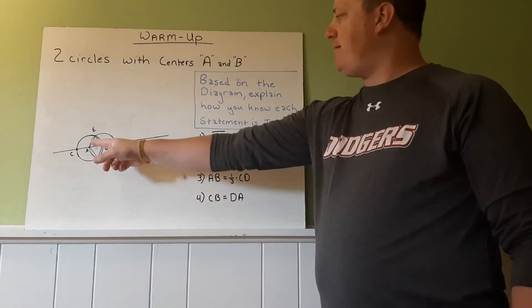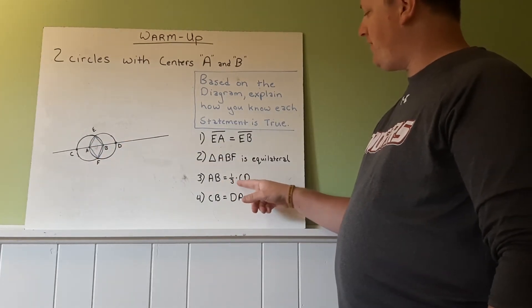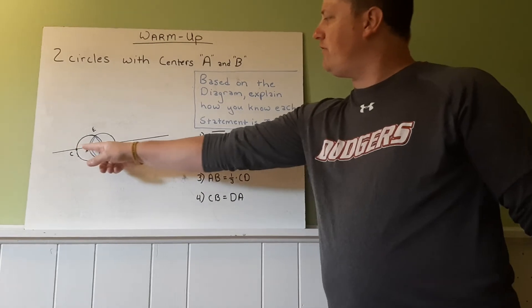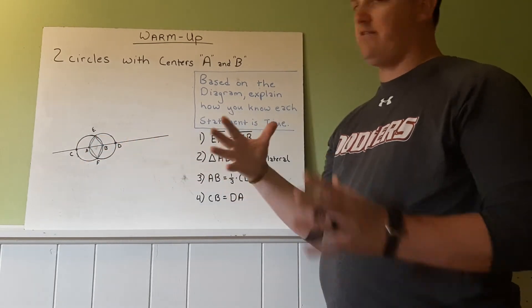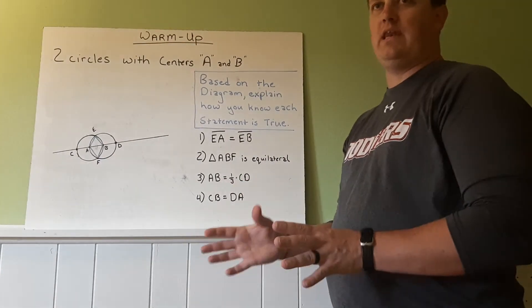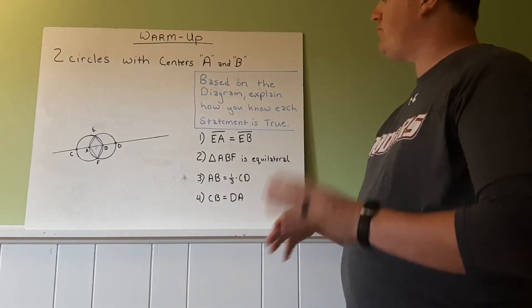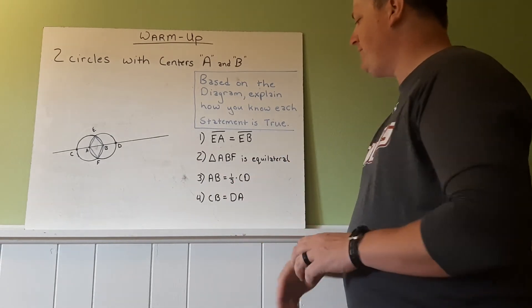All right. Number three says AB, this distance right here, equals one third times CD. So this distance here from C to D is a distance. And A to B is one third of that. It's a lot less. It takes three of them to make one. So try and explain how that happens.